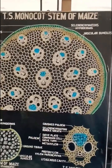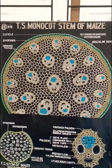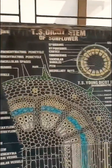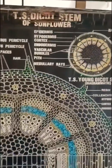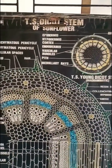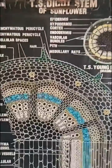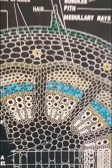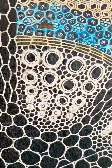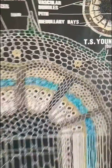This is monocot stem and this is dicot stem. Let's see first why it is stem. In stem, the condition is that protoxylem is towards the centre and metaxylem is towards the periphery. That's why it is stem.